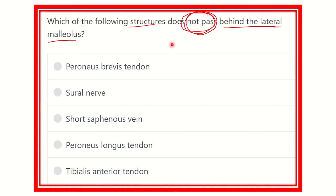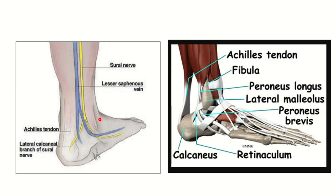Here we can see the lateral malleolus in this picture. Behind the lateral malleolus, we can see four structures pass: there are two tendons, one nerve, and one vein.